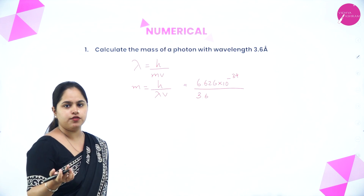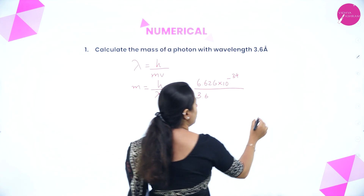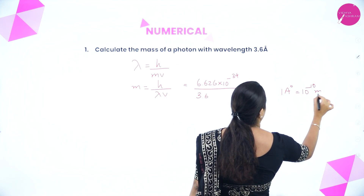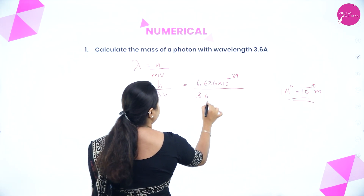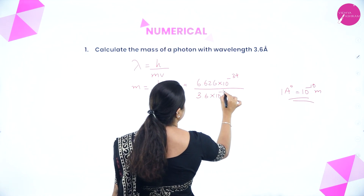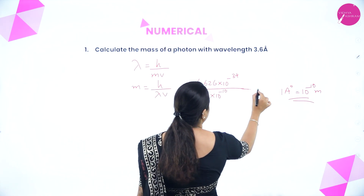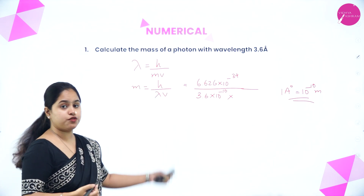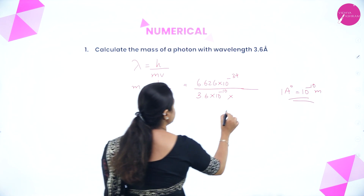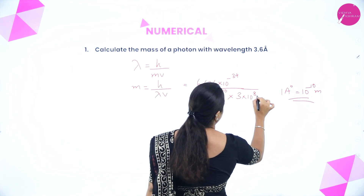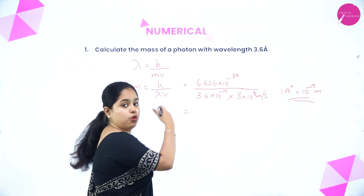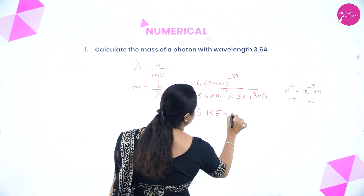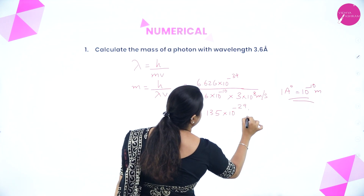The velocity of a photon is 3 × 10⁸ m/s. Substituting into m = h/(lambda × v): m = 6.626 × 10⁻³⁴ divided by (3.6 × 10⁻¹⁰ × 3 × 10⁸), giving a value of 6.135 × 10⁻²⁹ kg. It is important to convert the wavelength from angstrom to meters.